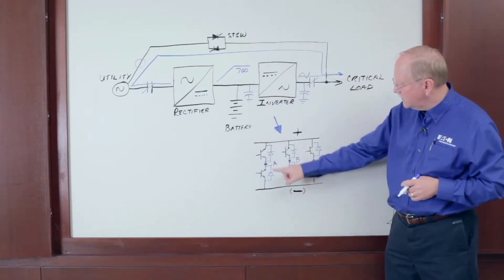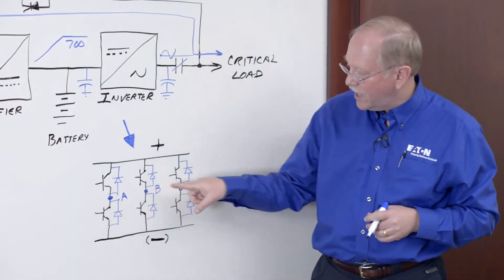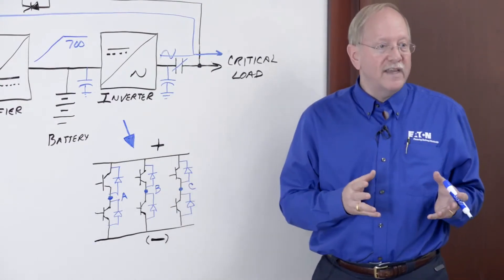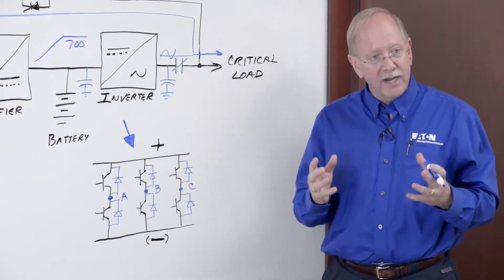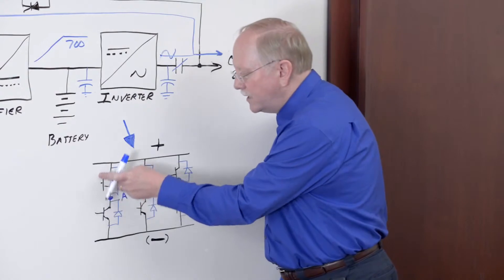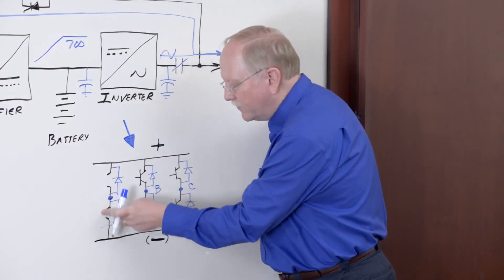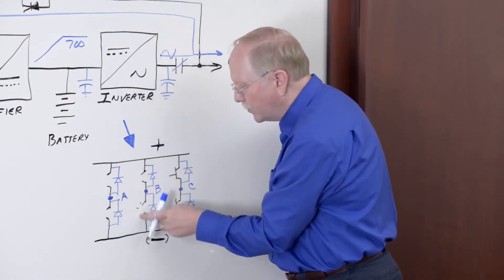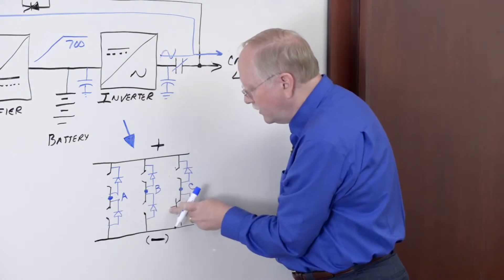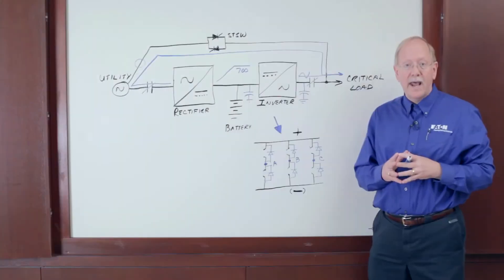Here's positive and negative DC, and the inverter transistors create phase A, B, and C, a three phase AC output. But if I'm not gating those transistors when I'm suspended, the transistors disappear from the circuit. They're open switches, leaving me with six diodes in a bridge rectifier schematic.